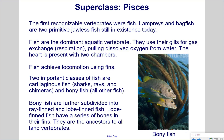Superclass Pisces. The first recognizable vertebrates were fish. Lampreys and hagfish are two primitive jawless fish still in existence today. Fish are the dominant aquatic vertebrate, using gills for gas exchange — pulling dissolved oxygen from water. The heart has two chambers, and fish achieve locomotion using fins. Two important classes are cartilaginous fish, which includes sharks, rays, and chimeras, and bony fish. Bony fish are subdivided into ray-finned and lobe-finned fish. Lobe-finned fish have a series of bones in their fins and are the ancestors of all land vertebrates; some, including the lungfish, are able to walk on land.